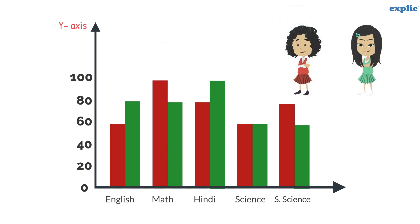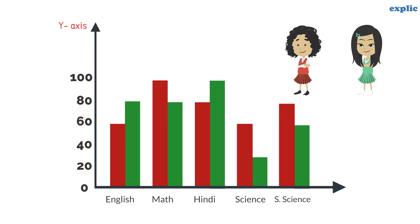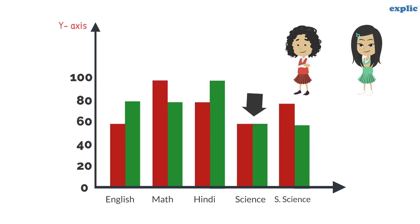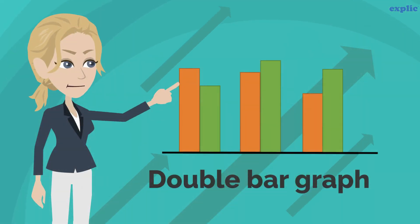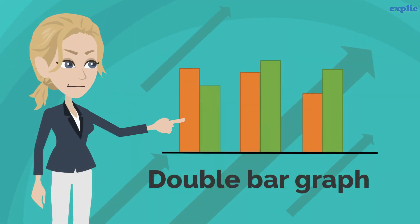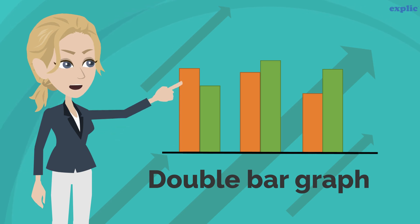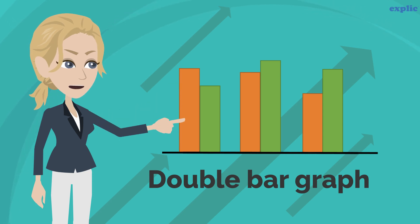In which subject have they scored equal marks? In science, they have scored equal marks, because the lengths of both bars are equal. As we saw, in the double bar graph, we can compare two entities without even looking at the values.